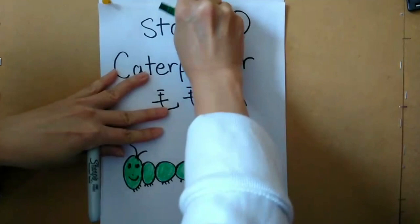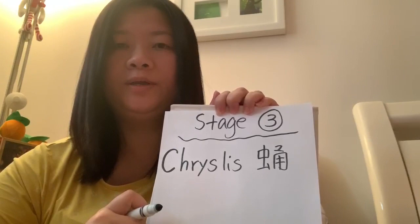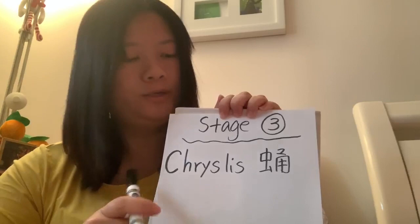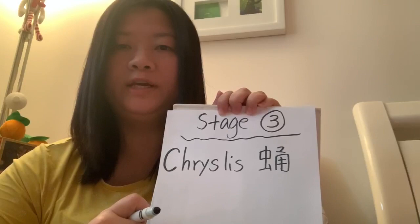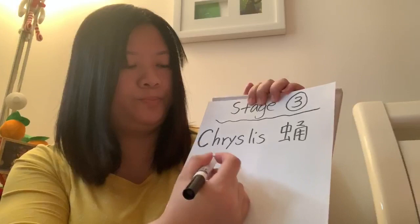OK, 好了。再見。First, we want to have the marker, and then we're going to draw a branch.